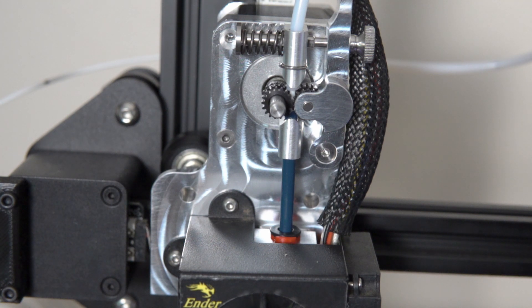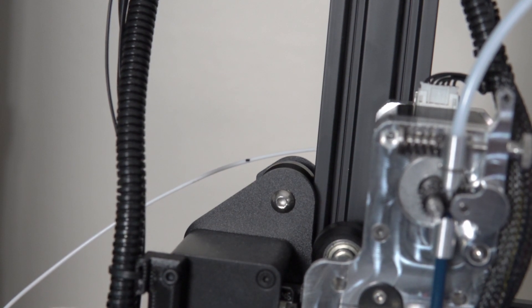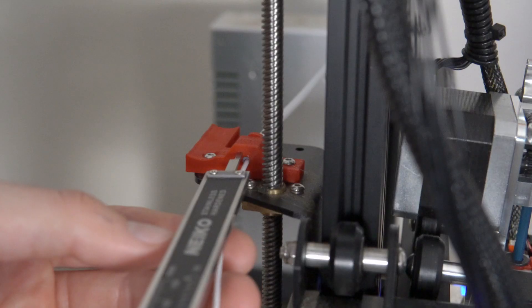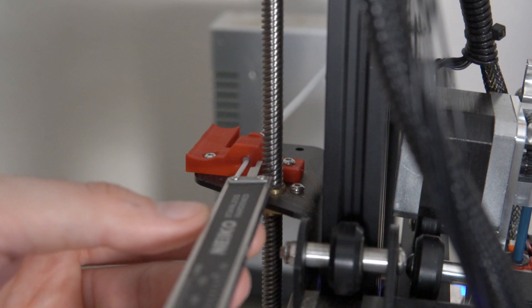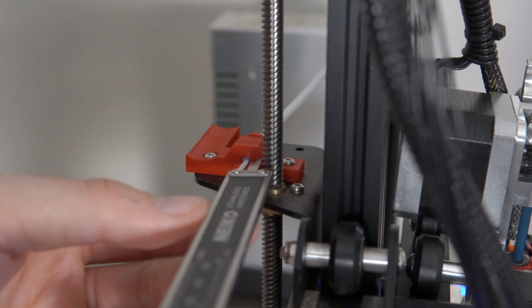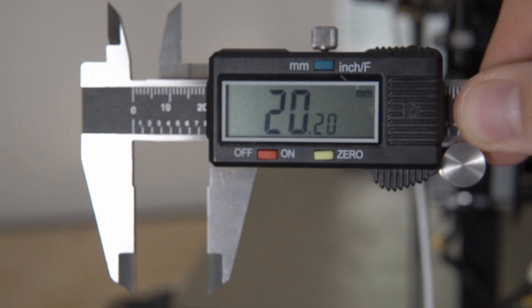Once it's done extruding, take your digital calipers again. The goal is if we marked it at 120 millimeters and told it to extrude 100 millimeters, there should be 20 millimeters between the marking and where the filament enters your printer. In this instance we're at 20.2, which to me is perfect. If you're still far off, you're basically going to repeat this process until you get closer to a number that makes sense and is reasonable.